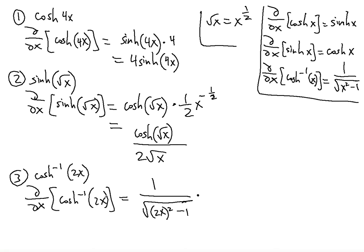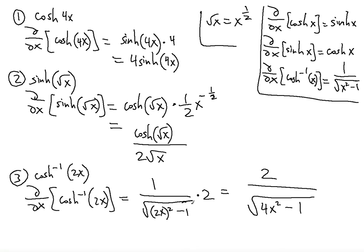After applying the arc cosh derivative, we still need the derivative of the inside, which is 2x — that gives us 2. So the final result is 2 over the square root of 4x² minus 1. I hope this tutorial was useful — please subscribe to my channel and I'll see you in my next video.